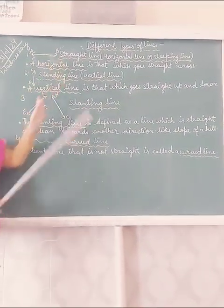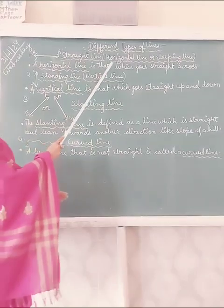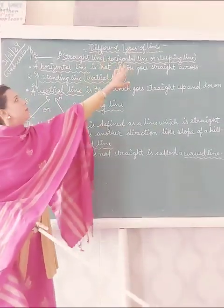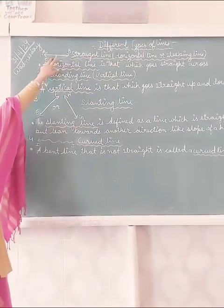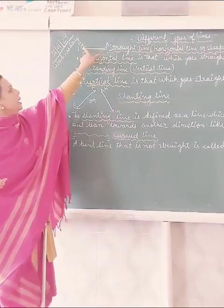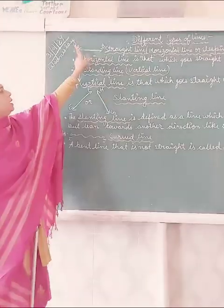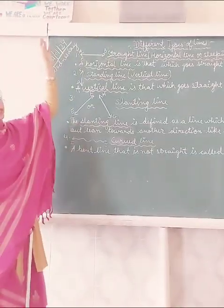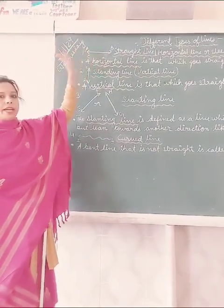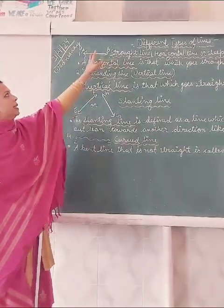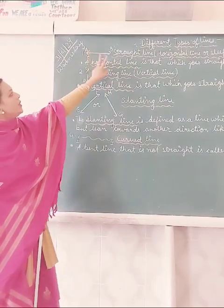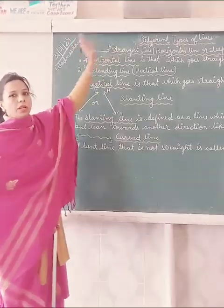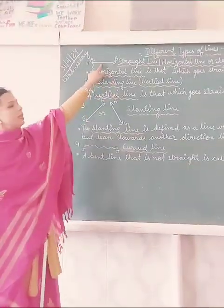The first type is the straight line. A straight line is also called a horizontal line or sleeping line. Here you can see I have drawn a straight line with point A and B. You can extend it from the B side or A side — as I told you, a line can extend from both sides. It has no end. When you draw a line like this, it is called a straight line.